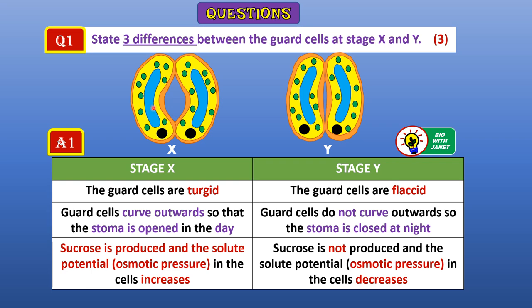Another difference is in the concentration of sucrose and potassium ions. At stage X, sucrose is produced through photosynthesis and potassium ions are actively transported into the guard cells, so the solute potential or osmotic pressure in the guard cells is higher. At stage Y, sucrose is not produced and may be converted back to starch for storage, and potassium ions move out of the guard cells — so the solute potential or osmotic pressure in the guard cells is lower compared to stage X.